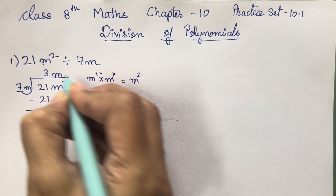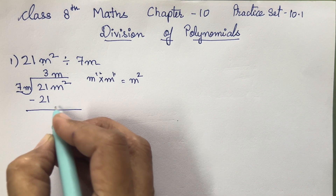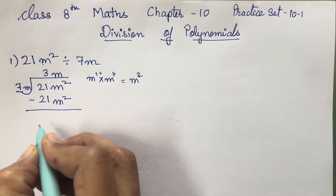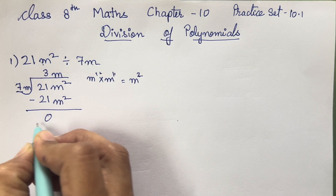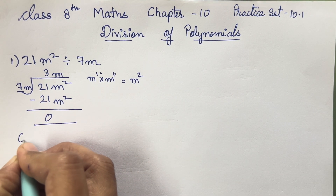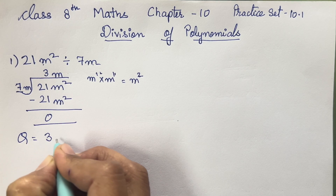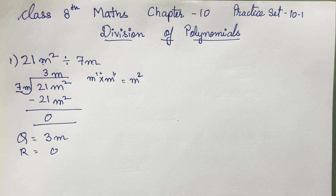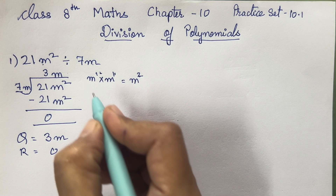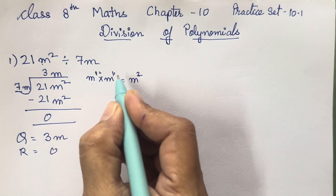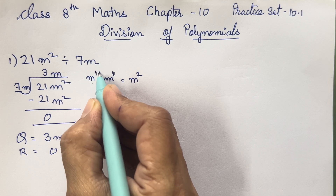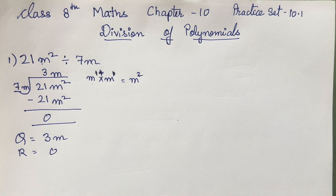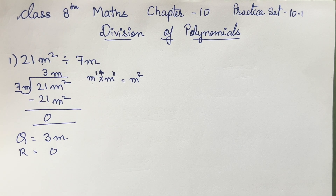We have to take 1m over here as well, so that we will get m square. So we have got the answer. Now we will write the quotient. Quotient is 3m and remainder is 0. You all have to remember the variable power — you have to take it and then add them. Whatever is remaining, carry it over to the quotient.